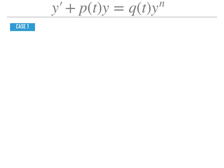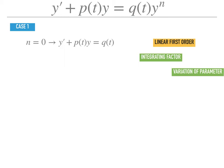There are three different cases that we want to discuss here. The first case is what happens when n equals 0. So when n equals 0, the equation will become y prime plus p of t y equals q of t. This is just a linear first-order differential equation, and you can use either integrating factor or variation of parameter to solve this equation.